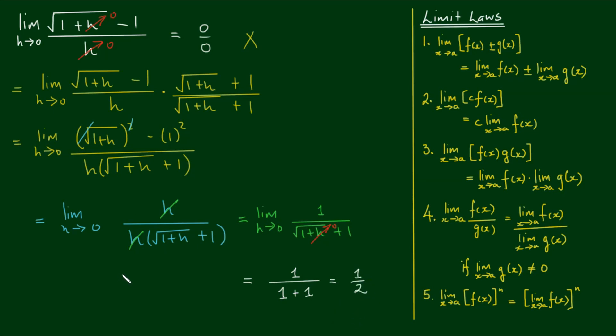So let's copy the original limit for completeness. We've got the limit as h approaches 0 of the square root of 1 plus h minus 1 all over h is equal to 1 half.